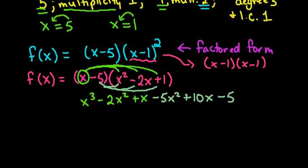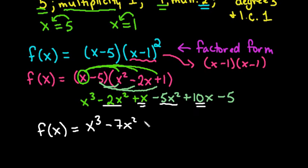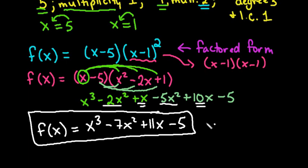And then to fully simplify it, we would write our answer f of x equals x cubed. And then I would add my x squared terms. This would give me negative 7x squared, because negative 2 plus negative 5 is negative 7. We would take our x plus our 10x, which would give us 11x. And then we would have the minus 5. So this would be my final answer in simplified or standard form.